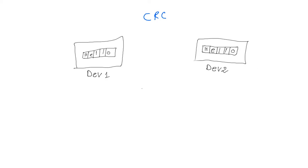Welcome. I'm going to explain the CRC in a simple way. Let's say we have device one and device two, and device one wants to send a string to device two. This is going to be done through a cable or wireless, and we're going to send the bits of a string — let's call it S — and this S will travel through the media to reach device two.